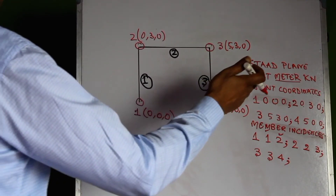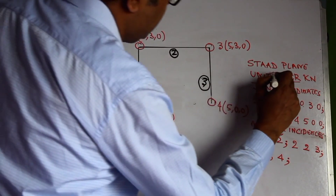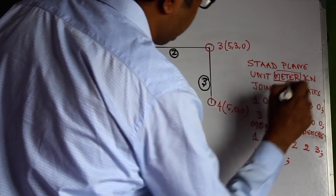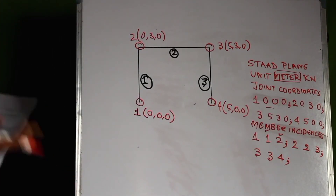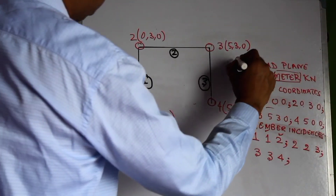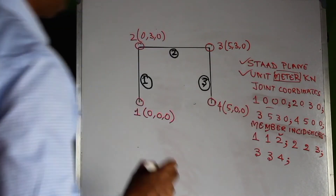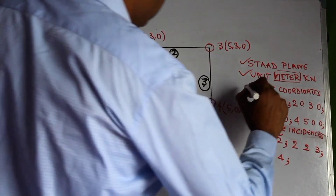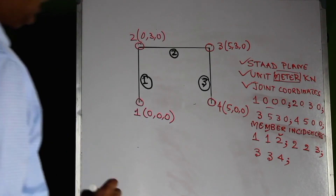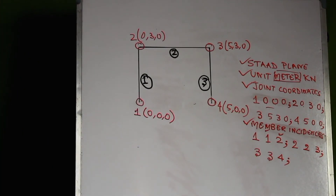Similarly, the unit system must come before the joint coordinates, because without the length units being defined, the joint coordinates would make no sense. So the sequence is: first, define whether the structure is STAAD PLANE or SPACE; second, define the length units; third, define the joint coordinates; and fourth, define the member incidences. These four steps lead to the creation of the geometry.